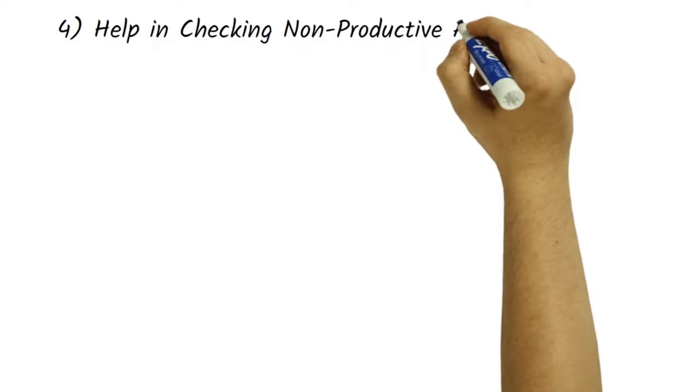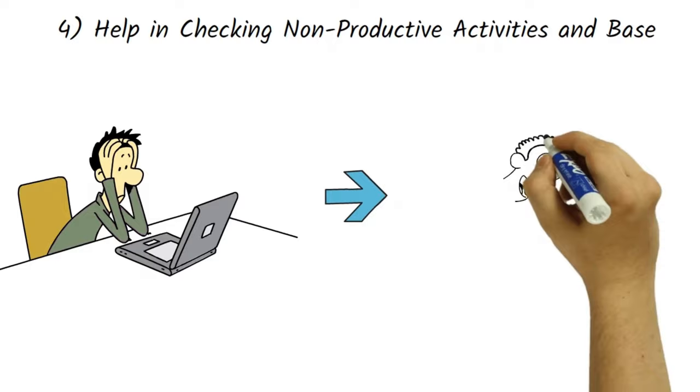Fourth, help in checking non-productive activities. By this, we can reduce non-productive activities and increase the productive activities and help to grow our organization and generate good revenue.